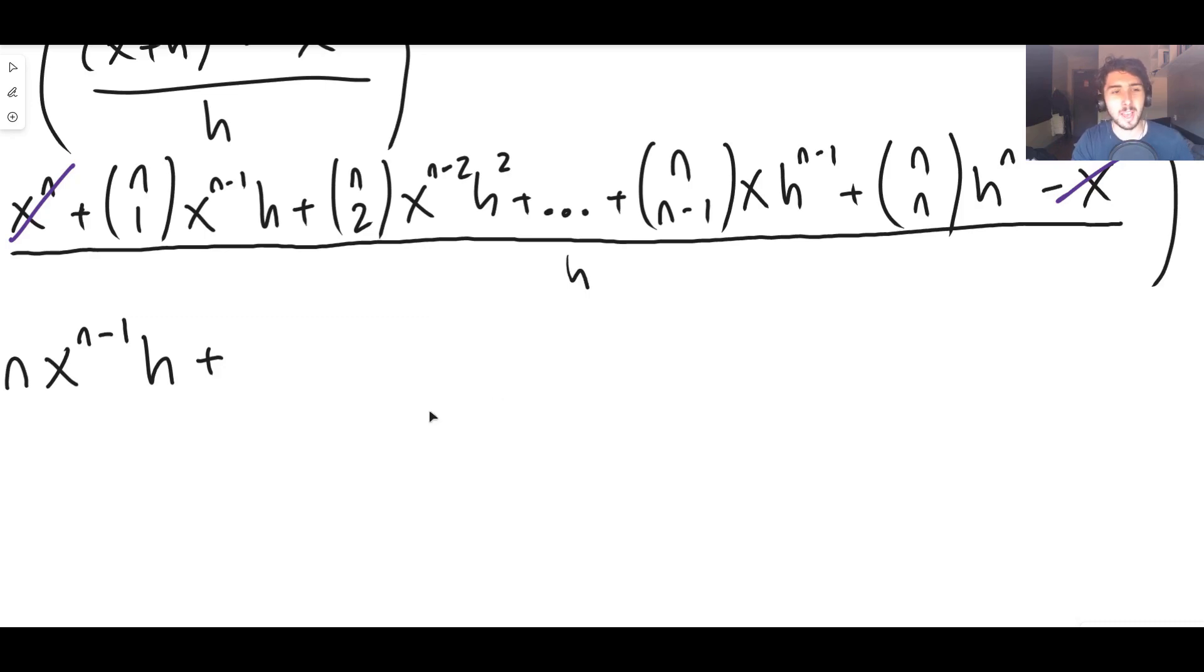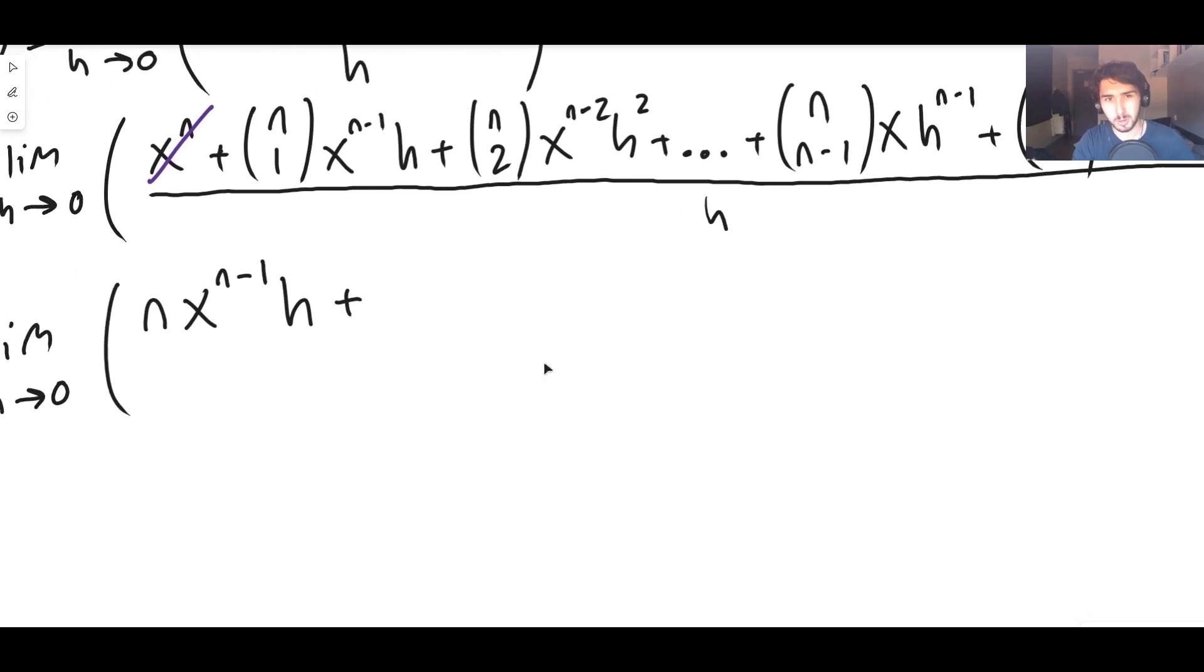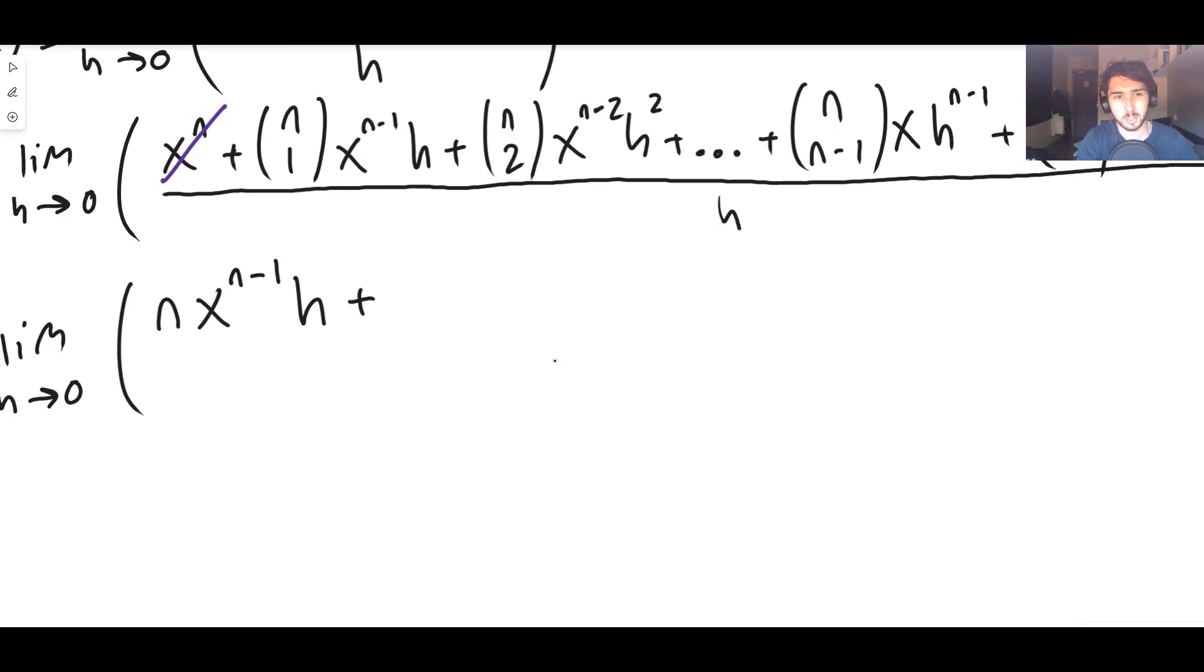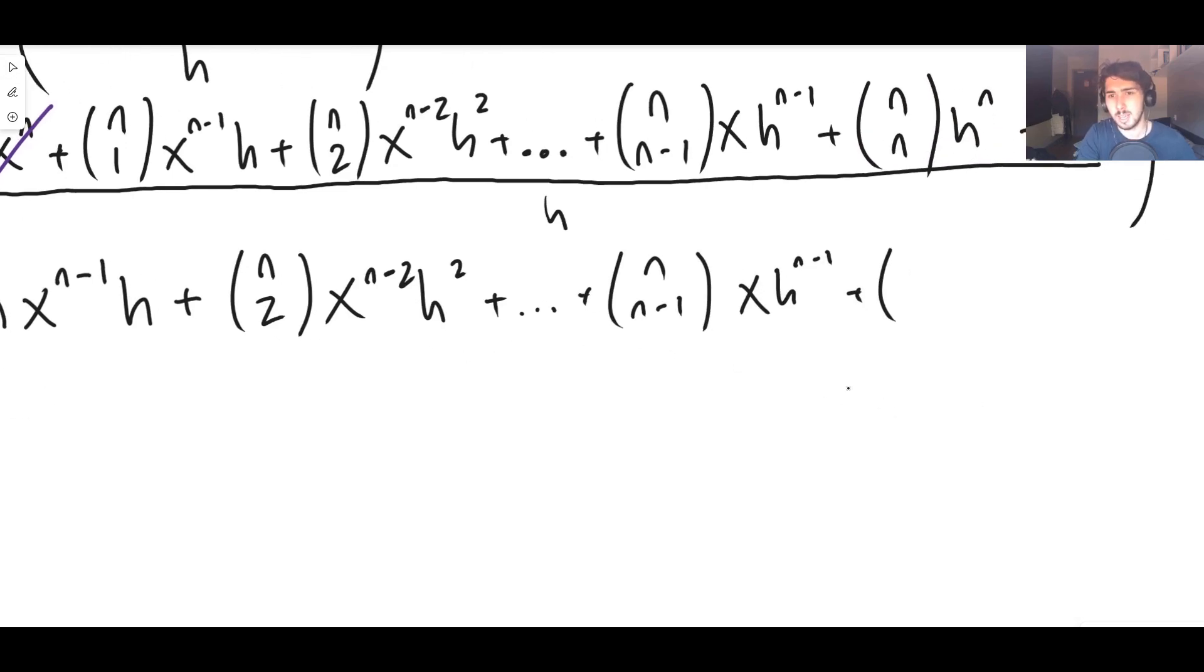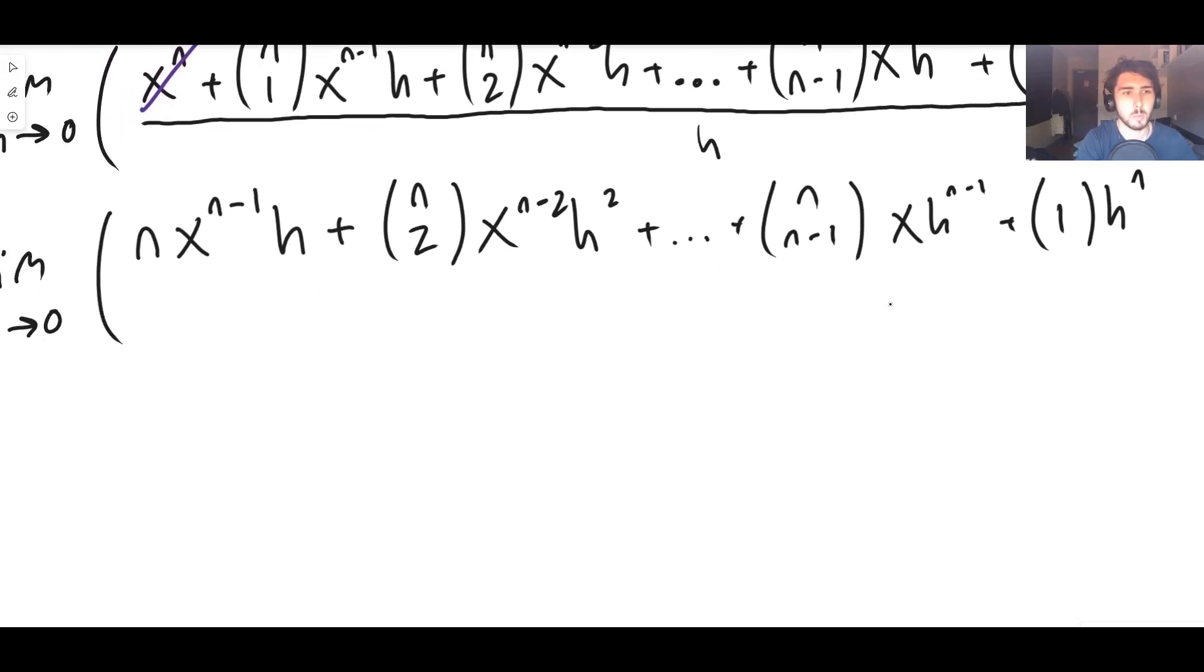Notice how every single term going forward has got at least two h's multiplied together. It's a h squared or higher, which means when we divide by h in a second, there's still going to be a h. And when we go to zero, everything's going to times by zero and it actually doesn't really matter what we do. So I'm just going to rewrite some of these terms because you'll see in a second that they actually all just go to zero anyway.